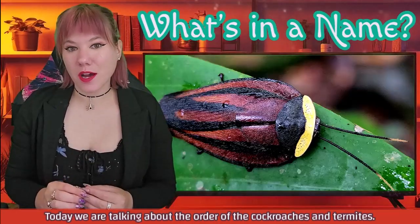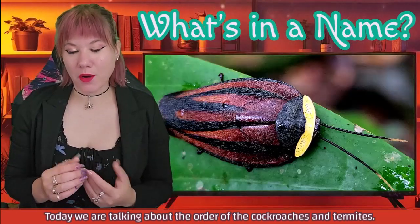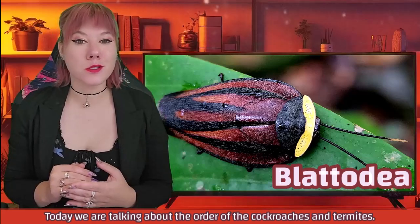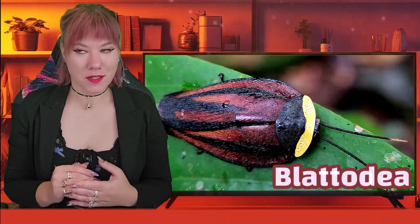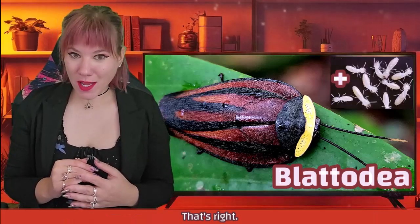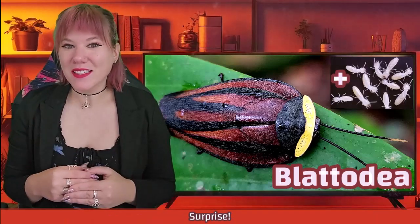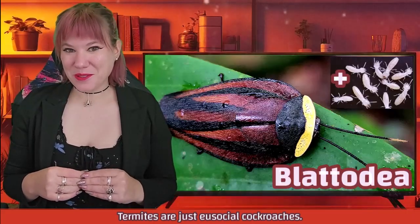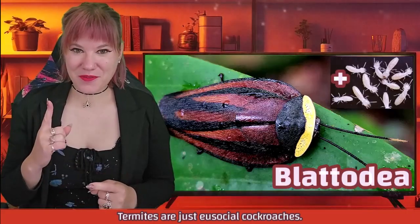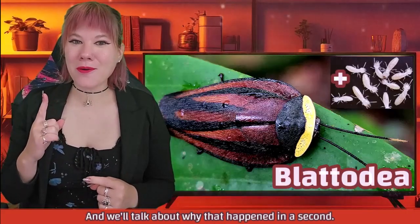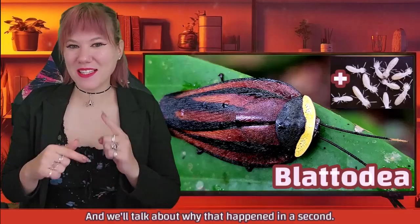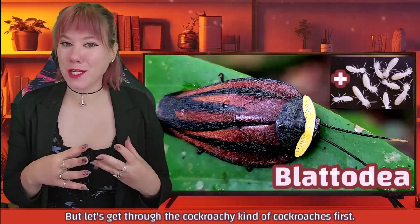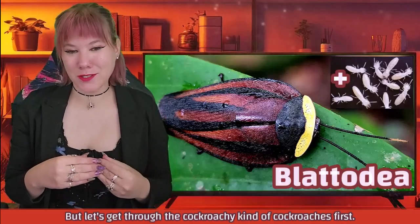Today, we are talking about the order of the cockroaches and termites. That's right! Surprise! Termites are just eusocial cockroaches, and we'll talk about why that happened in a second, but let's get through the cockroachy kind of cockroaches first.